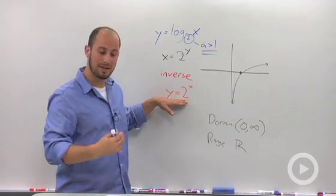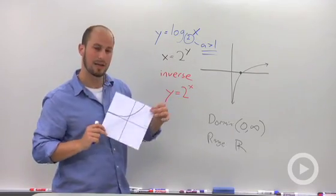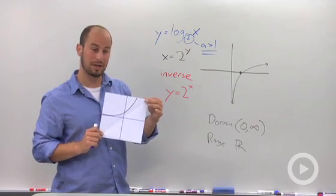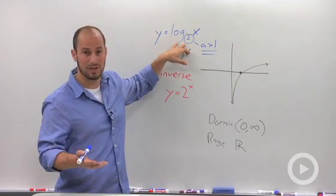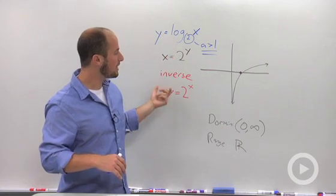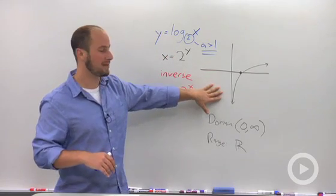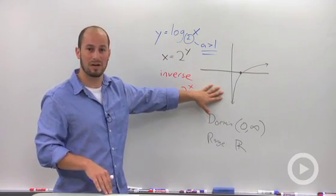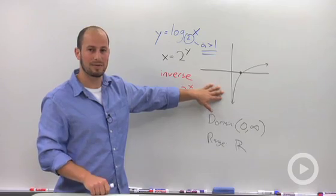This exponential graph that we looked at, the first one, was if our base was greater than 1. So that translates to this base having the same restrictions. So by using our properties of inverses, we were able to find the rough sketch of our log graph with our base greater than 1.